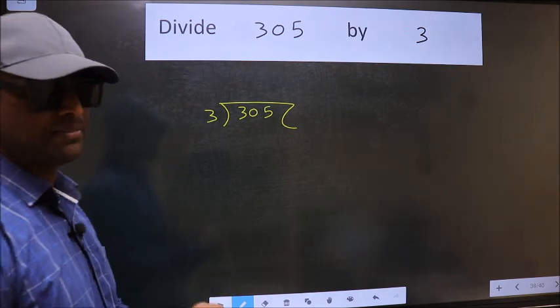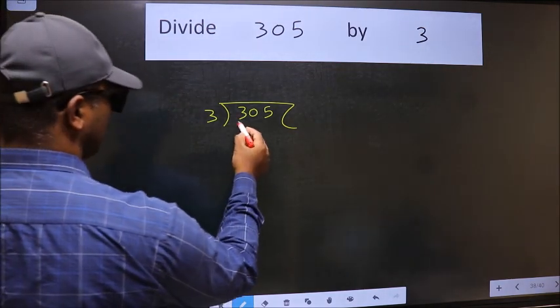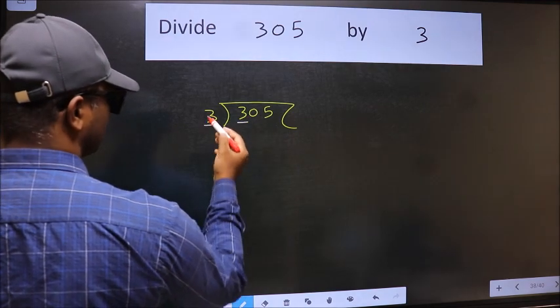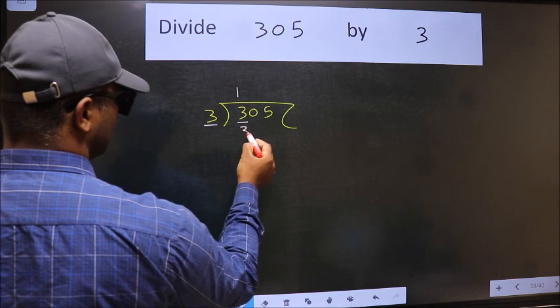This is your step 1. Next, here we have 3, here also 3. When do we get 3 in 3 table? 3 1s 3.